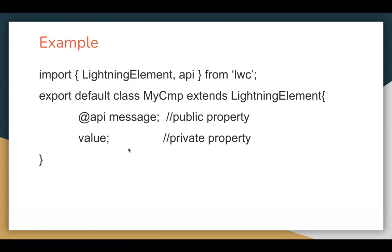Here's an example. If you declare a property — for example, message — annotated with @api, it becomes a public property and can fetch its value from outside the Lightning Web Component. A property like value without @api is private and can only be used inside that component. Generally, if you want to fetch the ID of a particular record, you create a recordId property as public using @api, so it can fetch the record ID from outside the LWC.